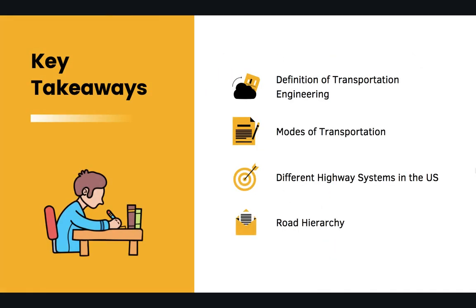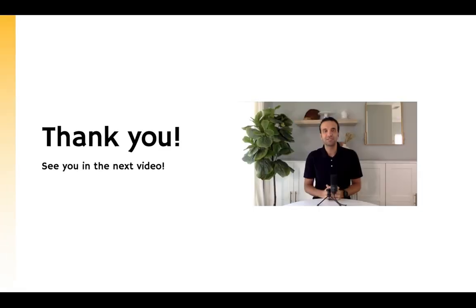To wrap up this chapter: we talked about the general definition of transportation engineering, modes of transportation, different highway systems in the U.S., and the definition of road hierarchy in terms of mobility and access for different types of streets and roads. Thank you for tuning in — that was it for Chapter 1, and I will see you in the next video.